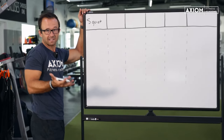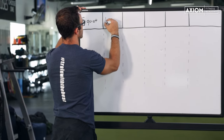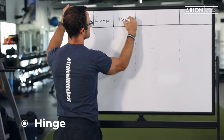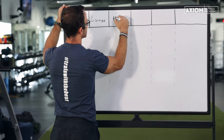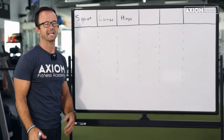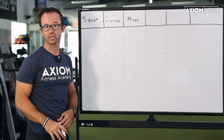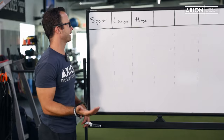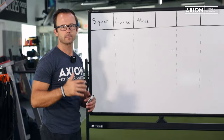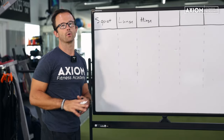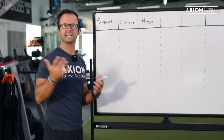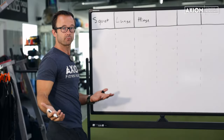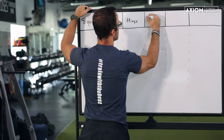So we've got squat — what else do we do with the lower body? Well, we lunge and we hinge, and just about every lower body exercise — minus some single joint stuff like a hamstring curl or a calf raise, which are great exercises — just about all of our compound movements could be categorized amongst these three. They all have some unique stances, positions, and challenges. So squat, lunge, hinge: these are three big primary lower body movement categories.